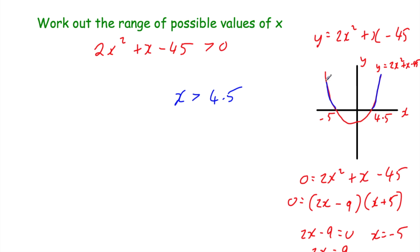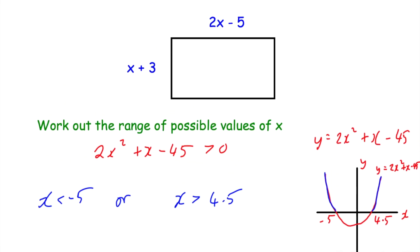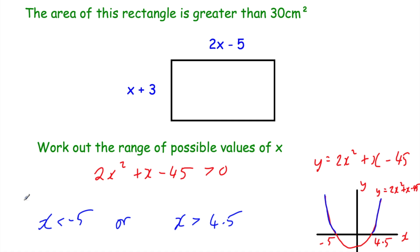Likewise, any value of x to the left of negative 5, such as negative 6 or negative 5.1, is also above the x-axis. So any value of x less than negative 5 or greater than 4.5 gives a positive answer. However, going back to the context, if x were negative we'd get a negative length, which wouldn't make sense. So the negative solutions don't work in this context, meaning the possible values of x must be greater than 4.5.